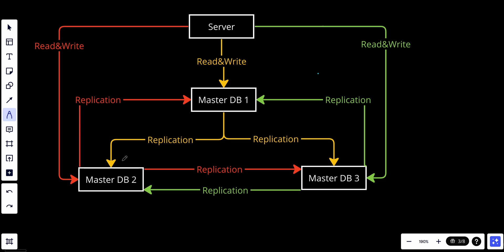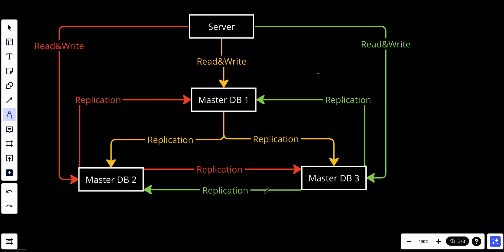We have bi-directional replication. The data changes made on any master node are replicated to all other master nodes. This replication process is bi-directional, meaning data changes can flow in both directions between any pair of master nodes — it goes both ways.